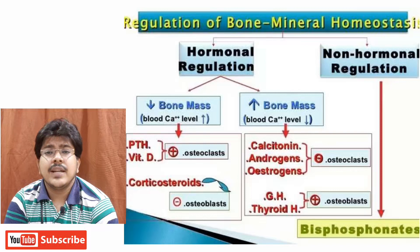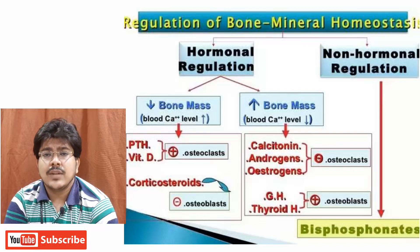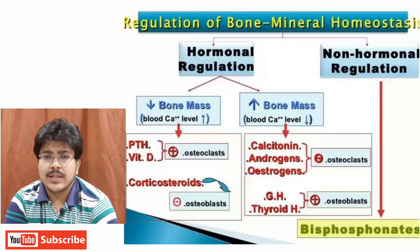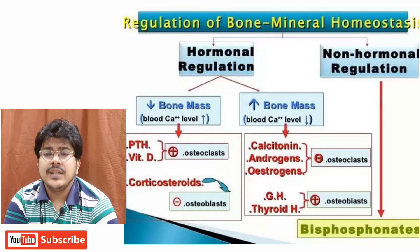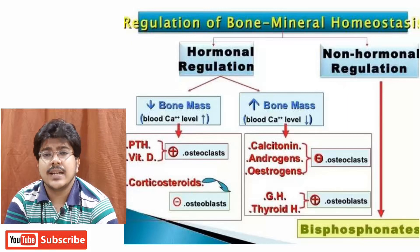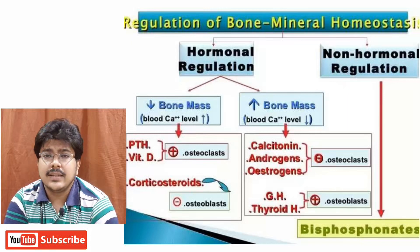Calcitonin, androgen and estrogen decrease osteoclastic activity, reducing osteoporosis. Corticosteroid-like drugs inhibit osteoblasts, which decreases bone density. On the other hand, anabolic hormones increase osteoblastic activity, thereby increasing bone mineral density.